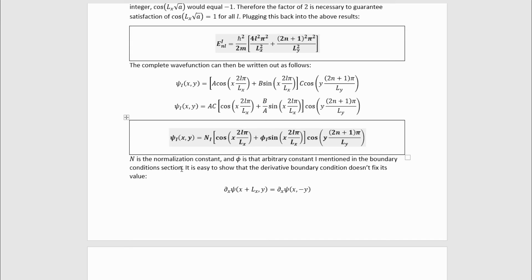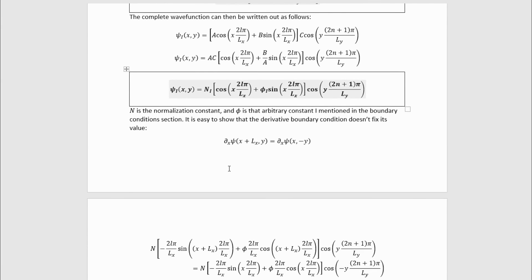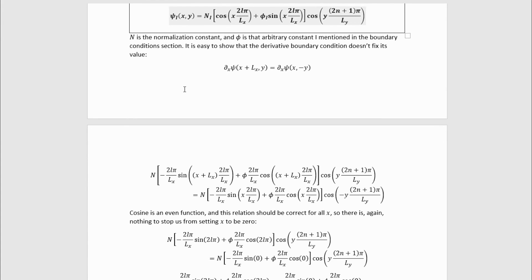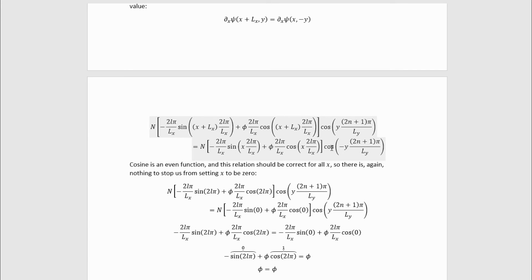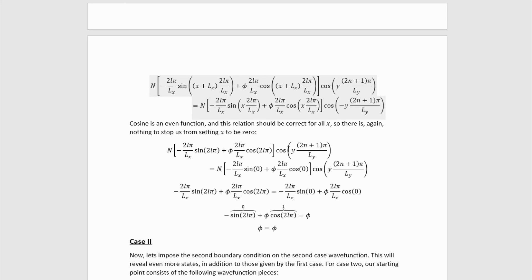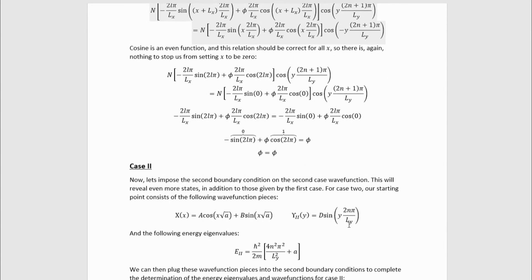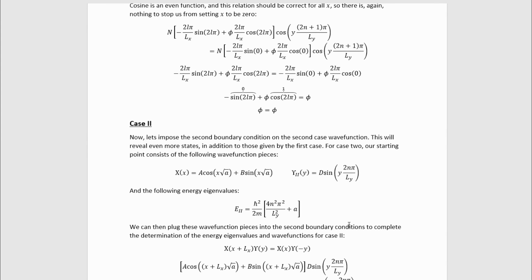N is the normalization constant and phi is the arbitrary constant I mentioned in the boundary condition section, the one that results from translation invariance in the x direction. It's easy to show that the derivative boundary condition doesn't fix this like you'd normally think, simply by plugging things in. So plugging the wave function pieces in gets us here. Again, we remember that cosine is even, so we can get rid of the minus sign. And we can take x to be equal to zero for the same reason as above. Evaluating sines and cosines and dividing things out ultimately gets us to phi equals phi, which is satisfied for every value. It is in fact arbitrary. The same thing can be done on the second part wave function once we get it. It works out exactly the same.